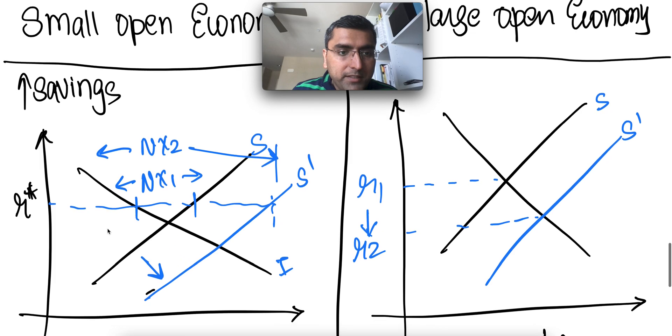But in small economies, small open economies, their net exports, the NX1, which was this intersection of this S&I line here, which is the net export, they will not have equilibrium at this point. They'll have equilibrium to whatever the world market or the large economy set.